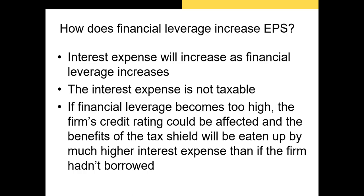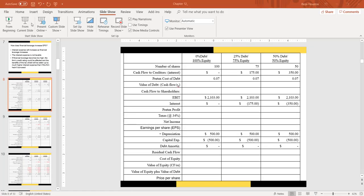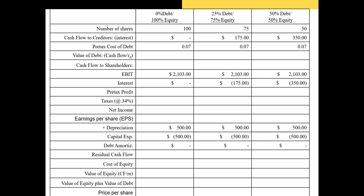Let's look at an example. We have a firm that can fund its operations through three different capital structures: one fully funded through equity, one where 25% of capital is raised through a bond issuance, and one where half of the capital is raised through debt. This example will show exactly how the value of a firm, the price per share, and the value of equity change as we lever up.